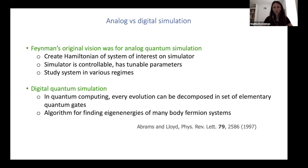On the other hand, in digital quantum simulation, we think of a universal quantum computer where the evolution can be decomposed in a set of elementary quantum gates. And there we can formulate algorithms for finding eigen energies of many body systems and other properties.